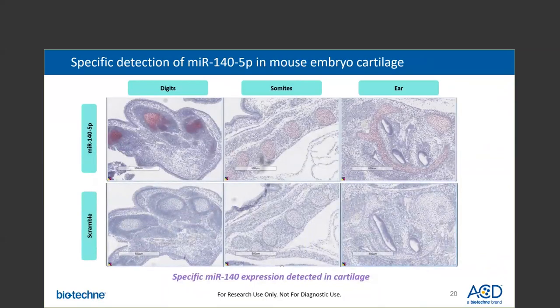Another example shown here is the detection of microRNA-140 in mouse embryo cartilage tissue. Existing publications indicate that this microRNA is specifically expressed in cartilage tissue. Our assay demonstrates that microRNA-140 is detected specifically in mouse cartilage tissue, such as the digits, somites, and ears. We're also showing the same mouse cartilage tissue with a scramble probe to further demonstrate specificity — the scramble probe is very clean in the tissue.